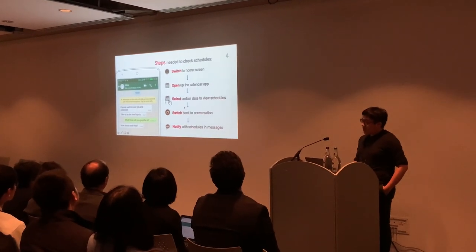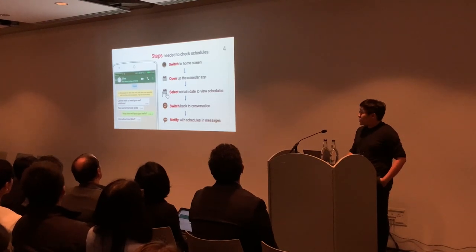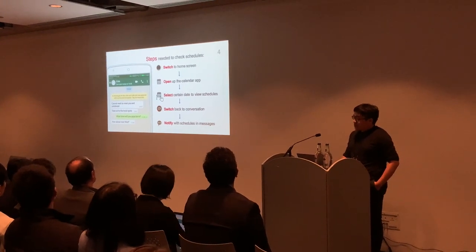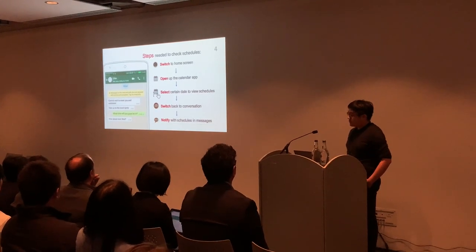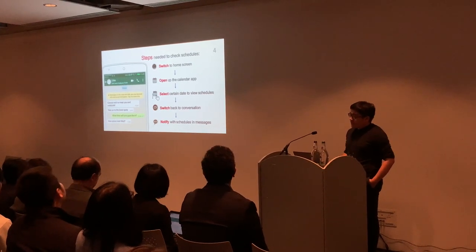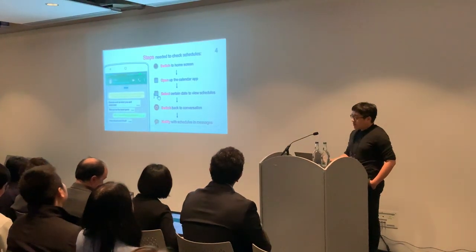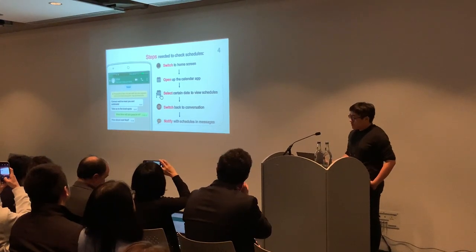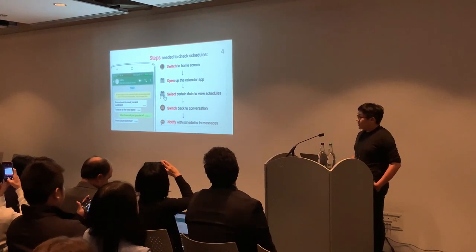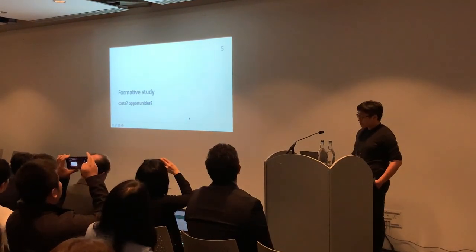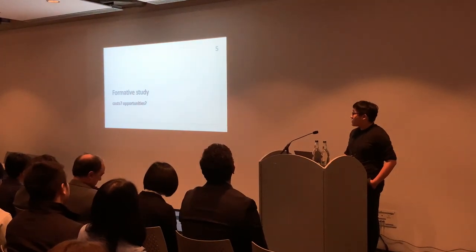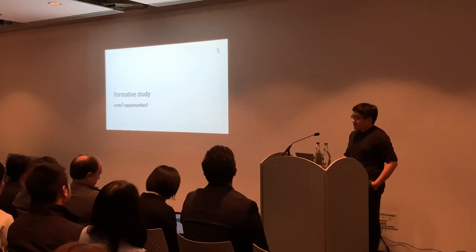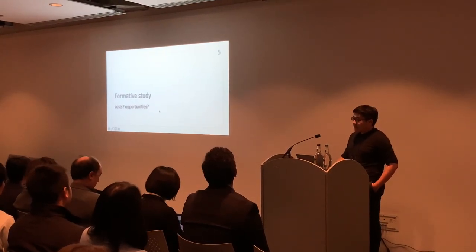Here is an example of such a task. If a user is not sure about her upcoming schedule, she might go through these steps, switching back and forth from the calendar app to the current conversation. Once she has decided on specific dates to meet, she will probably go through all these steps again to create a new calendar event. All these steps add up, leading to a really inefficient experience. To identify the specific kinds of costs in tasks and uncover potential opportunities in supporting tasks, we conducted a formative study.